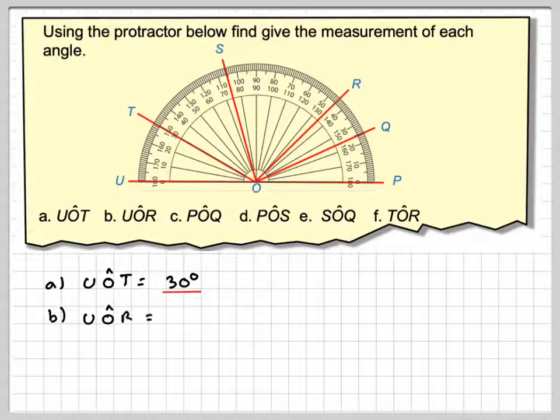Next one is UOR. So again, starting with U on 0, we're going to measure all the way around until we get to R here, which is at 135 degrees. So just a word of point, this angle here is what's known as an acute angle, and this angle here is known as an obtuse angle.